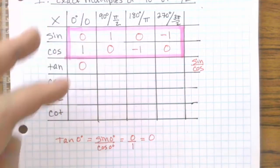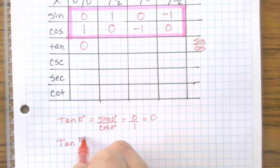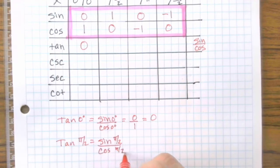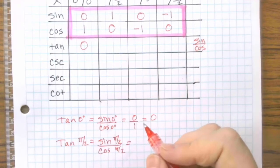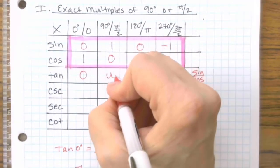Tangent is always sine over cosine. If you do 1 over 0, so tangent of π/2 or 90 degrees, you're going to take sine of π/2 over cosine of π/2. And that would be 1 over 0. You can't divide by 0, so it is undefined.